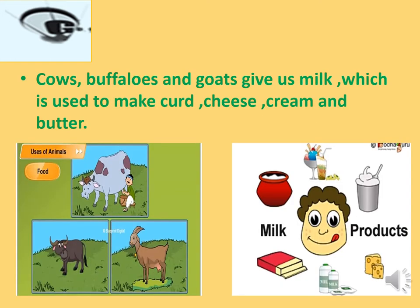Cows, buffaloes and goats give us milk, which is used to make curd, cheese, cream and butter. All these things are known as dairy products because they are made of milk. Milk is very healthy for our bones and teeth, so we should drink 2-3 glasses of milk every day.